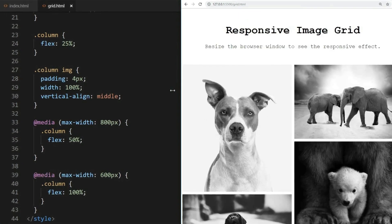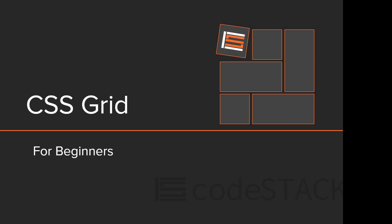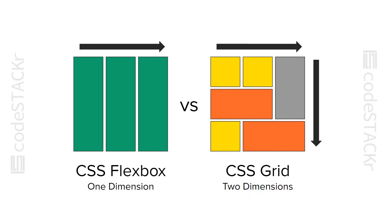With Grid, it's easier to lay out websites without having to use floats and positioning. Grid is very powerful compared to Flexbox. Flexbox is for the most part one-dimensional — you can choose to flex either the row or the column. But Grid is two-dimensional, meaning it can handle both columns and rows at the same time. Let's look at some terminology before we get to the code.